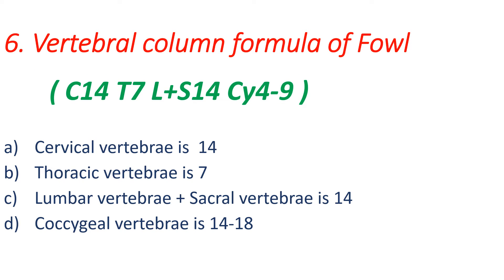The next and last one is the vertebral column formula of fowl. In the case of fowl, as already mentioned, the cervical vertebrae number is 14. So: C14, T7, and lumbar plus sacral vertebrae are fused in the case of fowl or birds, with a total number of 14. Coccygeal vertebrae vary from 4 to 9.